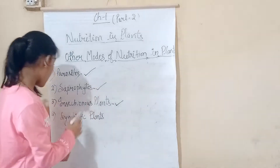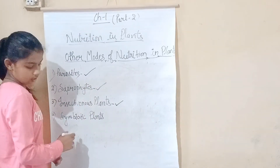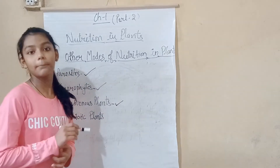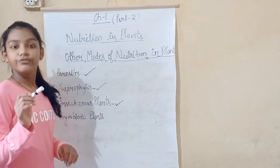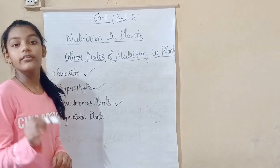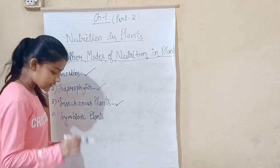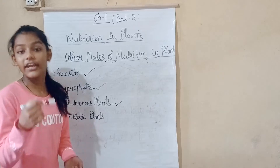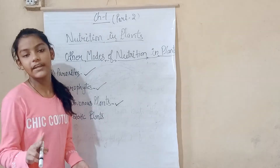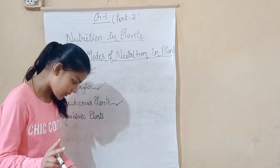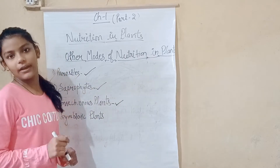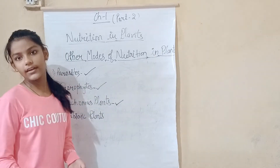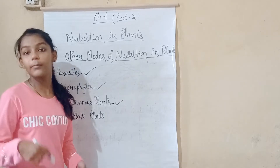Our last topic is symbiotic plants. The living together of two different species, where they act as part of the same plant and help each other for their survival, is called a symbiotic relationship. Symbiotic plants are those that form a relationship between two organisms, helping each other to absorb food and nutrients.